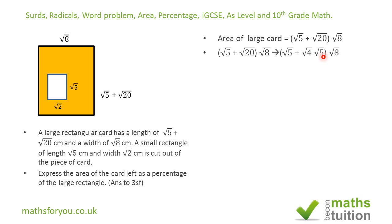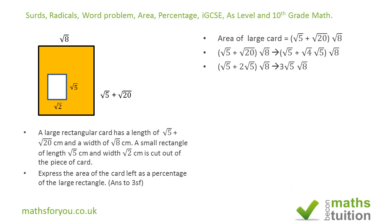So √5 + √20 times √8 is the same as (√5 + √4 × √5) times √8. And of course √4 = 2, so we now have (√5 + 2√5) times √8.